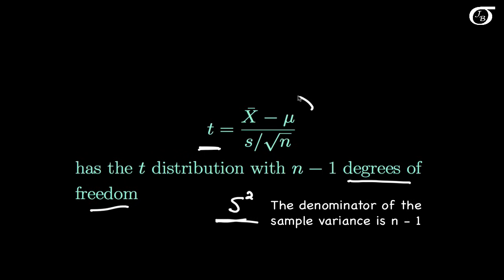If we look at this statistic, it looks very much like our z statistic, which has a standard normal distribution, except we've replaced the population standard deviation with the sample standard deviation. We are estimating a parameter with a statistic, so there is greater variability. So our t-distribution is going to look a lot like the standard normal distribution, except with greater variance.